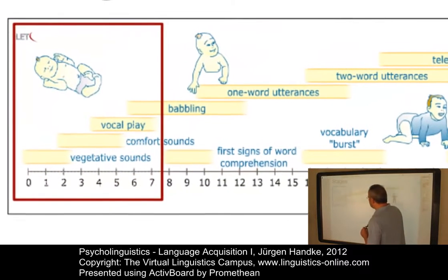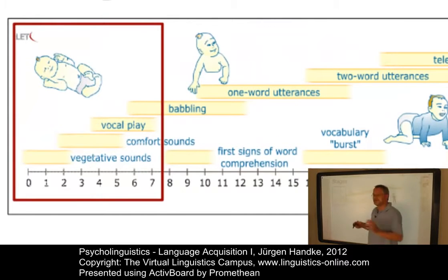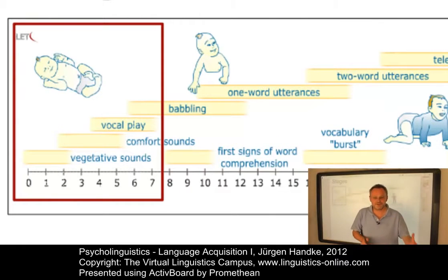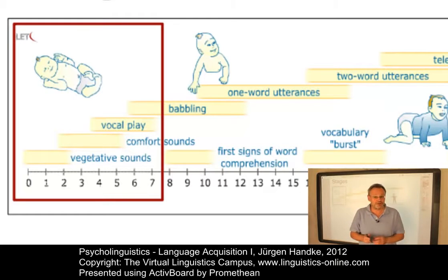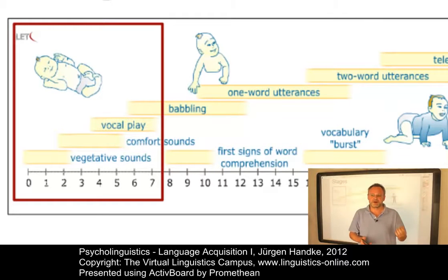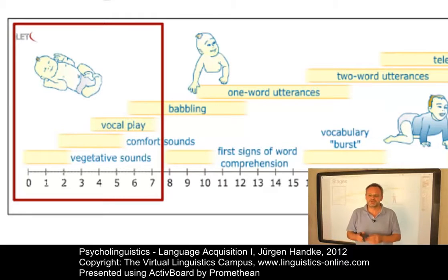At a very early age, we can identify three stages: vegetative sounds such as crying, burping or sucking noise; comfort sounds such as cooing and laughing; and a stage labeled vocal play, where children produce speech-like sounds — interestingly, vowels emerge before consonants.